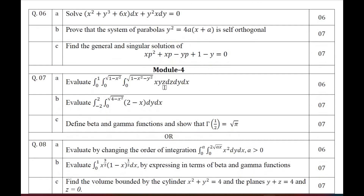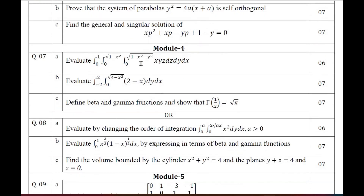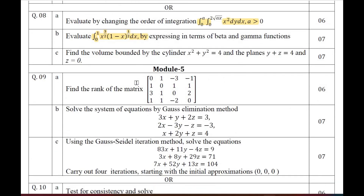Moving on to Module 4 — integral calculus. Question 7: evaluate a triple integral, evaluate a double integral, define beta and gamma functions, and show that Γ(1/2) = √π. The choice question: evaluate the given integral by changing the order of integration. Question 8: evaluate the integral in terms of beta and gamma functions. Find the volume of the given curve using integration.